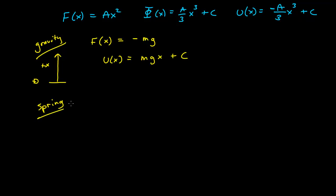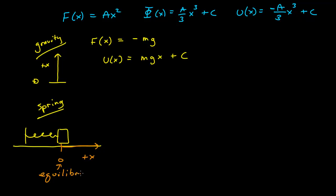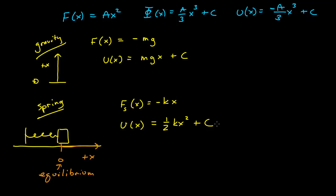Let's look at the spring force. We need to establish a coordinate system with zero at equilibrium and the positive x direction along the spring. Given this coordinate system, we can represent the spring force as f of x equal to negative kx — this is the x-component, and the force points towards equilibrium. The potential energy function associated with this force is the negative antiderivative, which gives one-half kx squared plus some constant c.